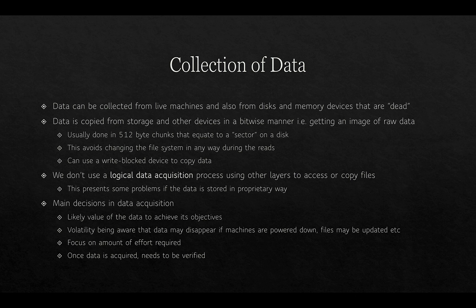We reconstruct the data physically, so it doesn't really matter what the file system is — we then extract data in a variety of different ways. The main decisions in data acquisition are: the likely value of the data to achieve your objectives, the volatility of that data (being aware that it might disappear if machines are powered down), the amount of effort and money required, and the fact that once acquired, data needs to be verified. For example, it may be possible to buy third-party software to break into a mobile phone, but if the crime is trivial, we may not want to invest that expense.